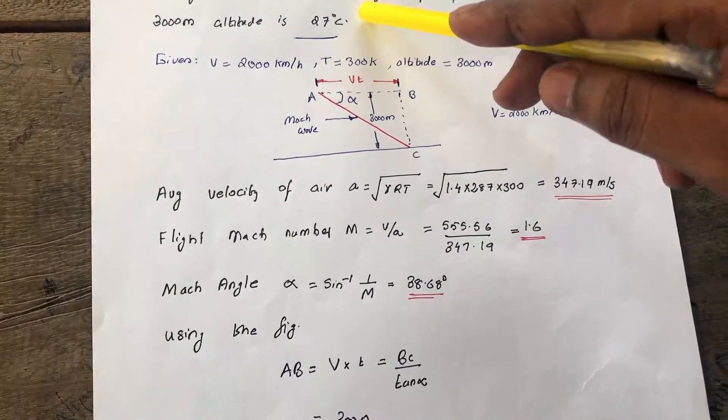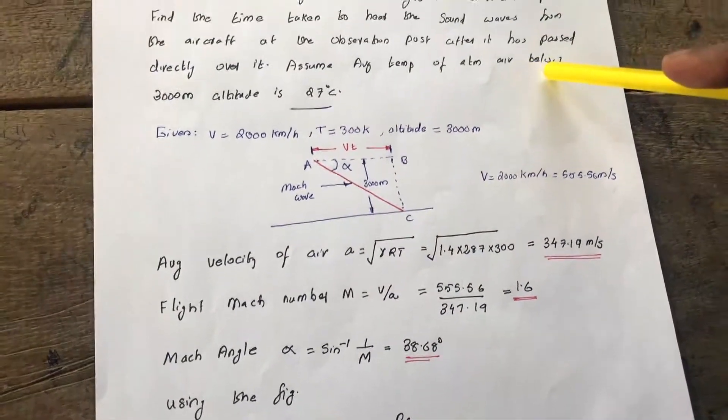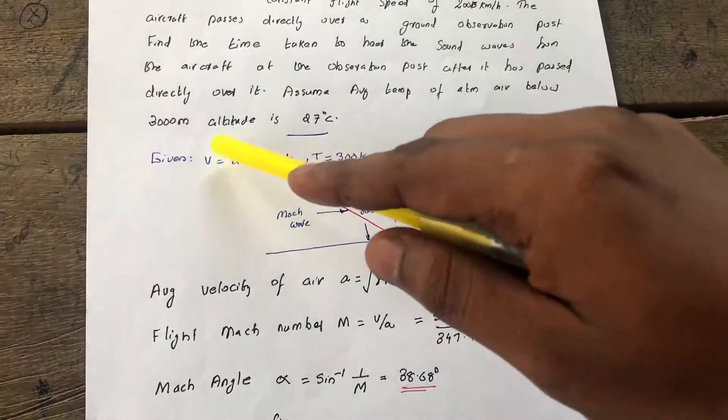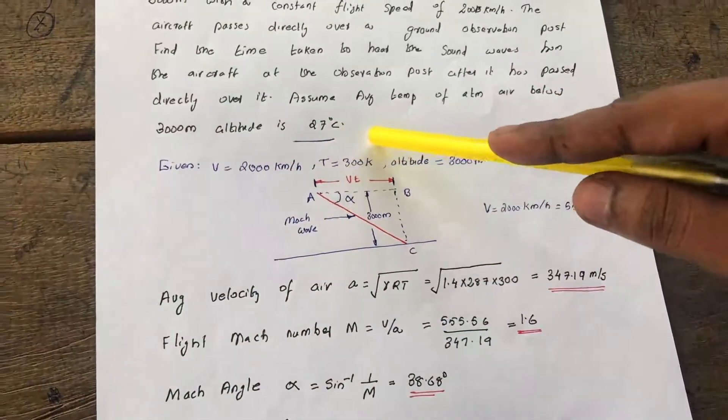Our question is to find out at what time the sound reaches at this post. It is also given: assume that the average temperature of the atmosphere above 3000 meters altitude is 27 degrees Celsius.